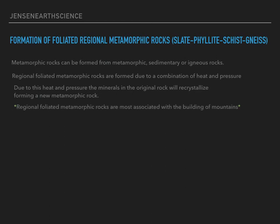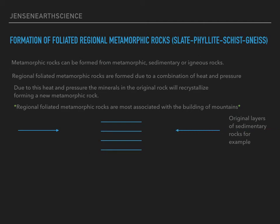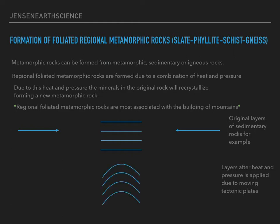Regional foliated metamorphic rocks are most associated with the building of mountains. So first we'll start with an original layer of sedimentary rocks, for example. These sedimentary rocks are in a perfect horizontal structure, and due to heat and pressure, they will change. These arrows represent the heat and pressure caused by the movement of tectonic plates, creating mountains. After the heat and pressure is applied, the original horizontal layers of sedimentary rocks will become metamorphic. This is called folding, and that is due to the heat and pressure caused by the movement of tectonic plates.